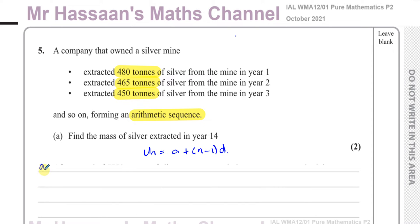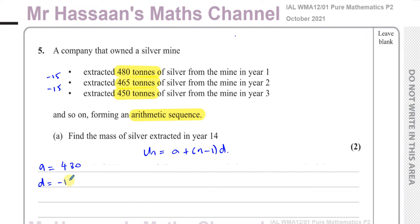We need to know what a is — the first term — which is 480 tons. The common difference is how to get from one term to the next: you take a term and subtract the one before it. Each time you get negative 15. So the common difference d = −15, and n = 14 since we want the 14th term.